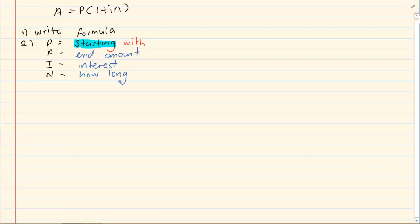Now when we are starting with interest, we are going to start by writing down the formula. Then we are going to write down what do we have. The next is to simply substitute and get an answer.